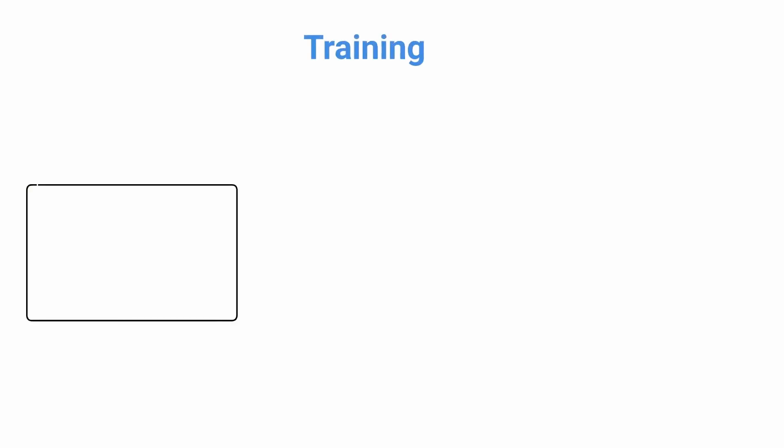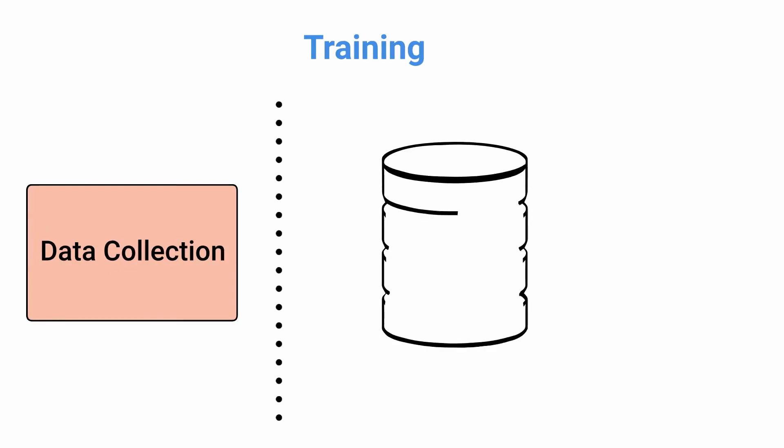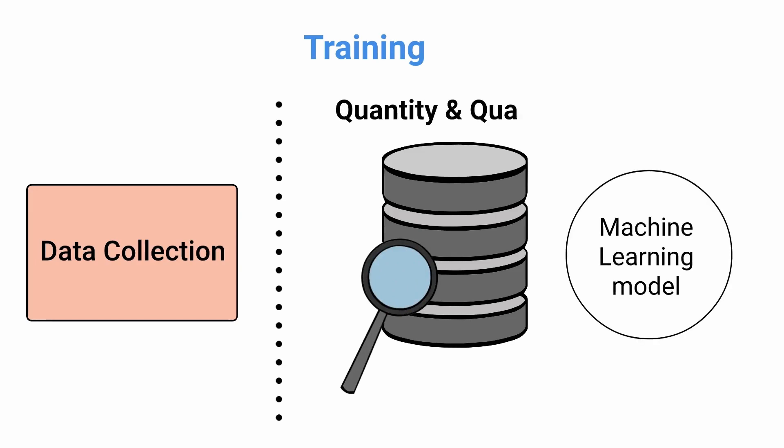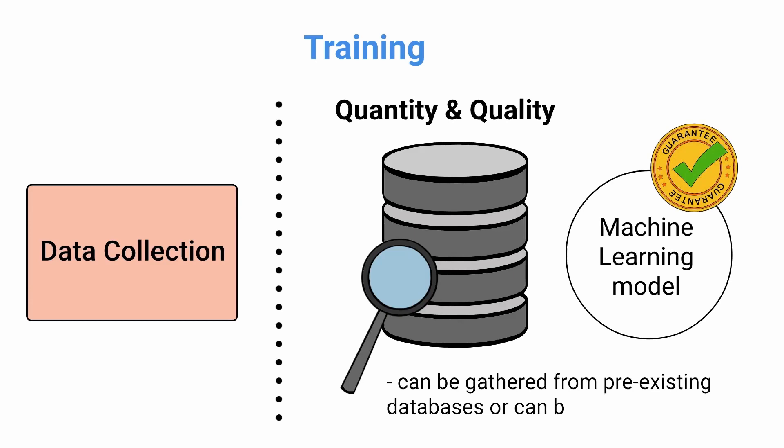Training. Data collection. After defining the problem statement, it is necessary to investigate and gather data that can be used to feed the machine. This is an important stage in creating an ML model because the quantity and quality of the data used will decide how effective the model will be. Data can be gathered from pre-existing databases or can be built from scratch.